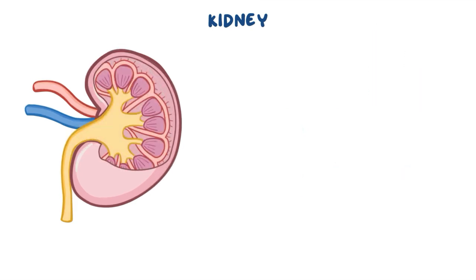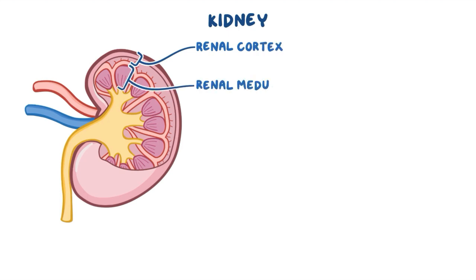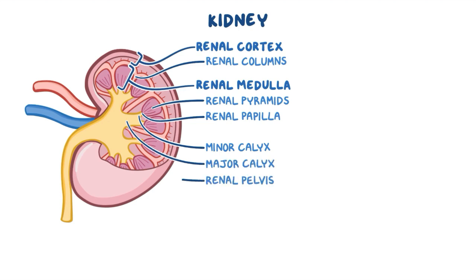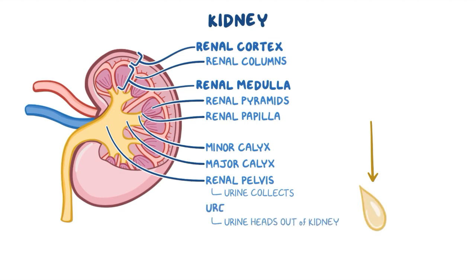If we take a cross-section of the kidney, there is an outside rim known as the renal cortex, and an inner portion, which is the renal medulla. The cortical tissue extends towards the medulla, forming renal columns that divide the medulla into pyramidal-shaped structures called the renal pyramids. The tips of the pyramids, called the renal papilla, project into minor calyces which join together to form major calyces which funnel into the renal pelvis. Urine collects in the renal pelvis and then heads out of the kidney through the ureter.